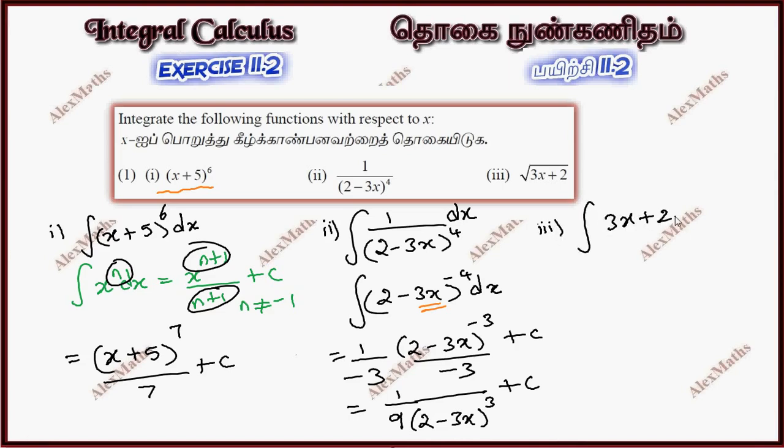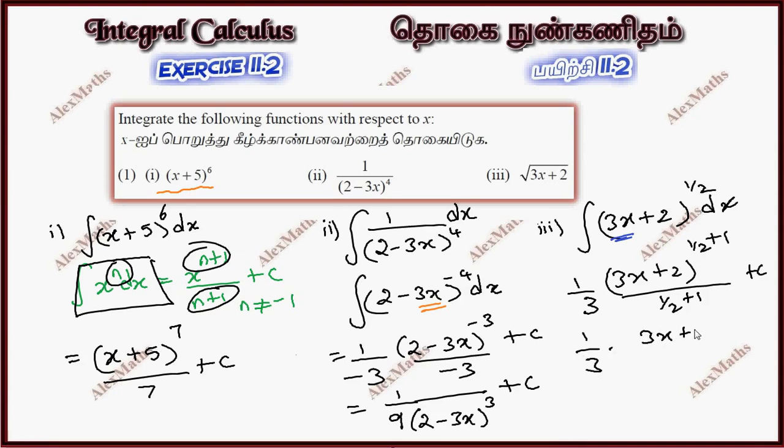Apply the x power n formula. That power half, the x coefficient is 3, so we take out 1 by 3. In the exponent formula apply, power half plus 1 add, half plus 1 is 3 by 2. So 3x plus 2 whole power 3 by 2. Multiply by 2 by 3, total answer is 2 by 9, 3x plus 2 whole power 3 by 2 plus c.